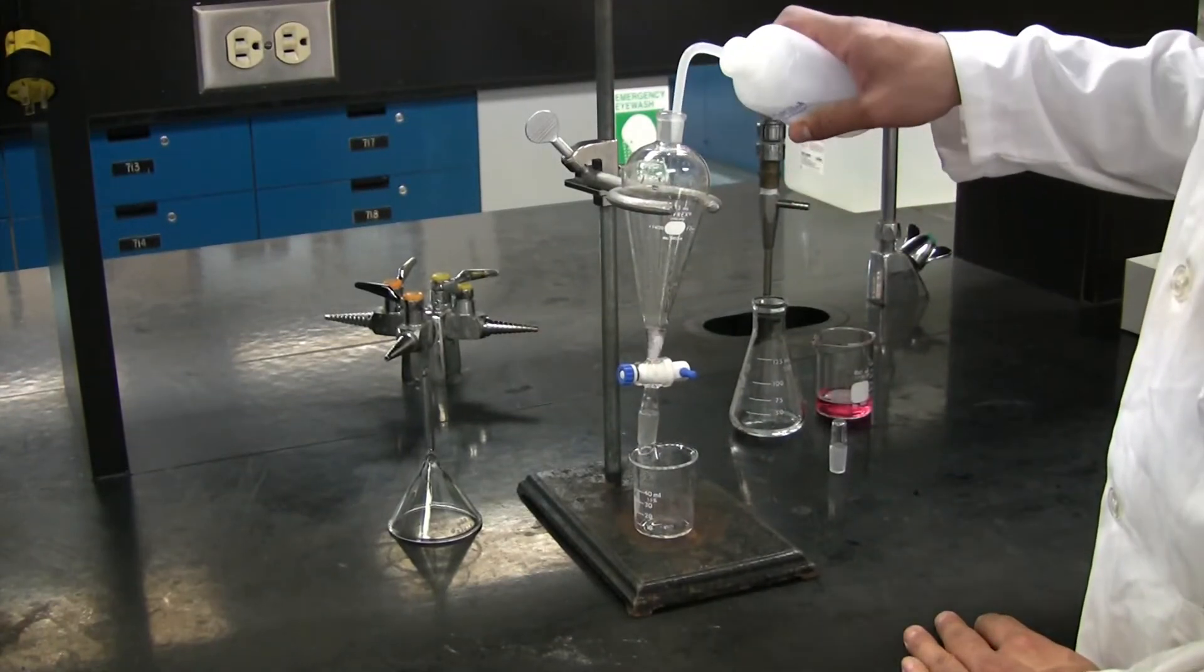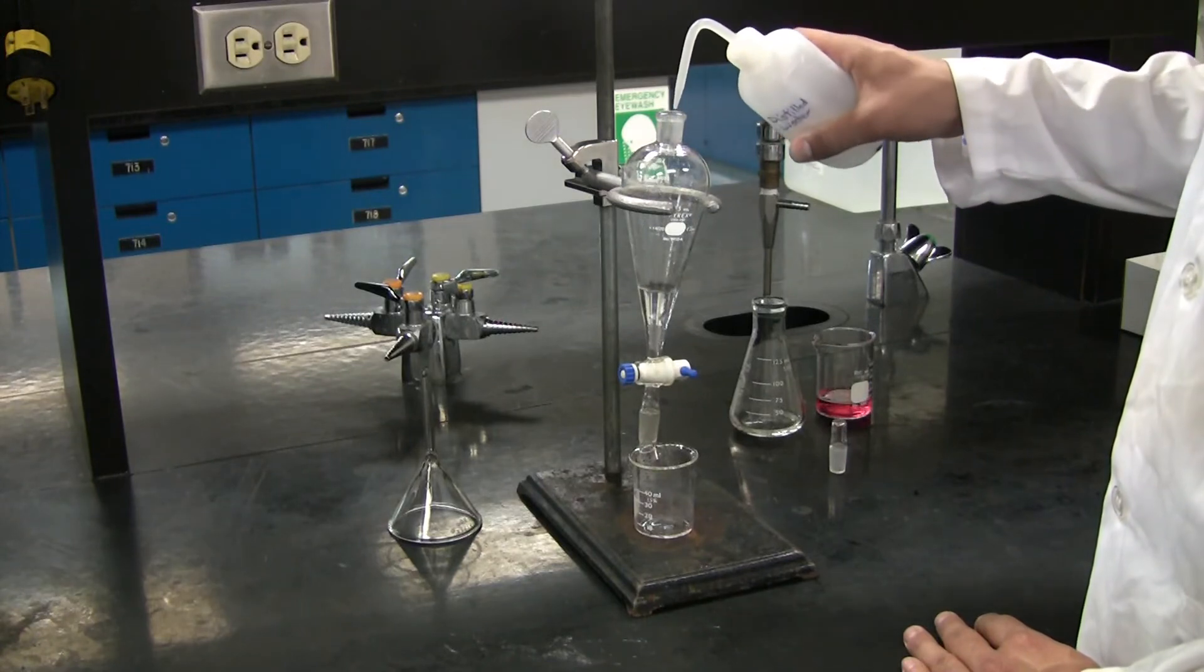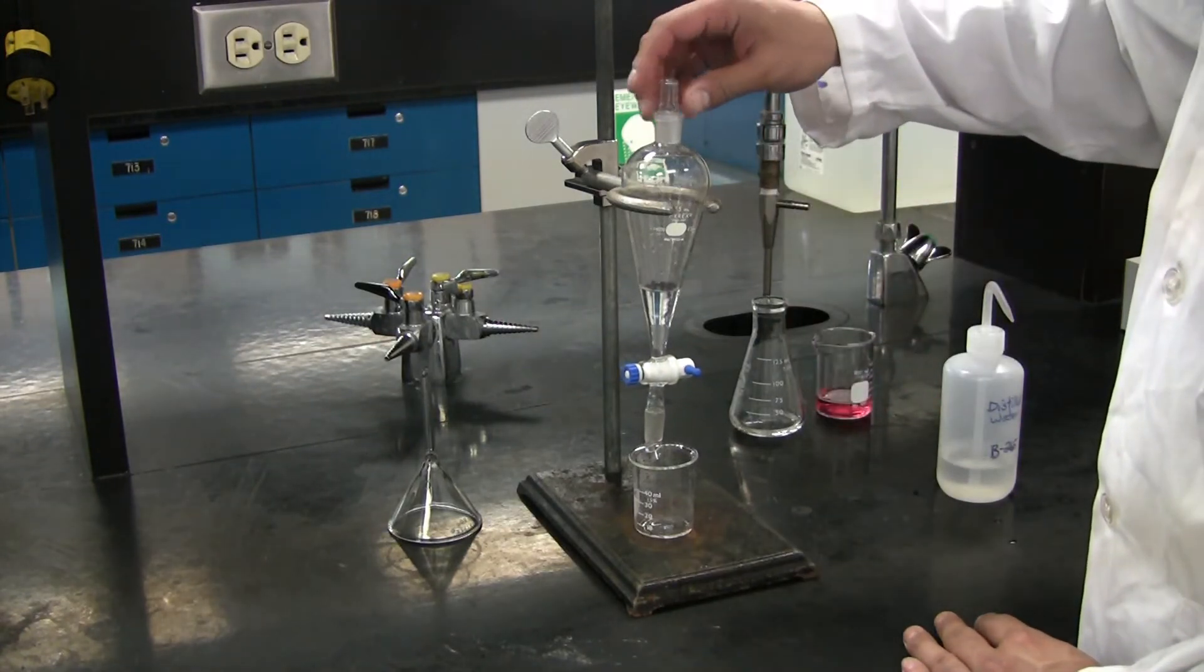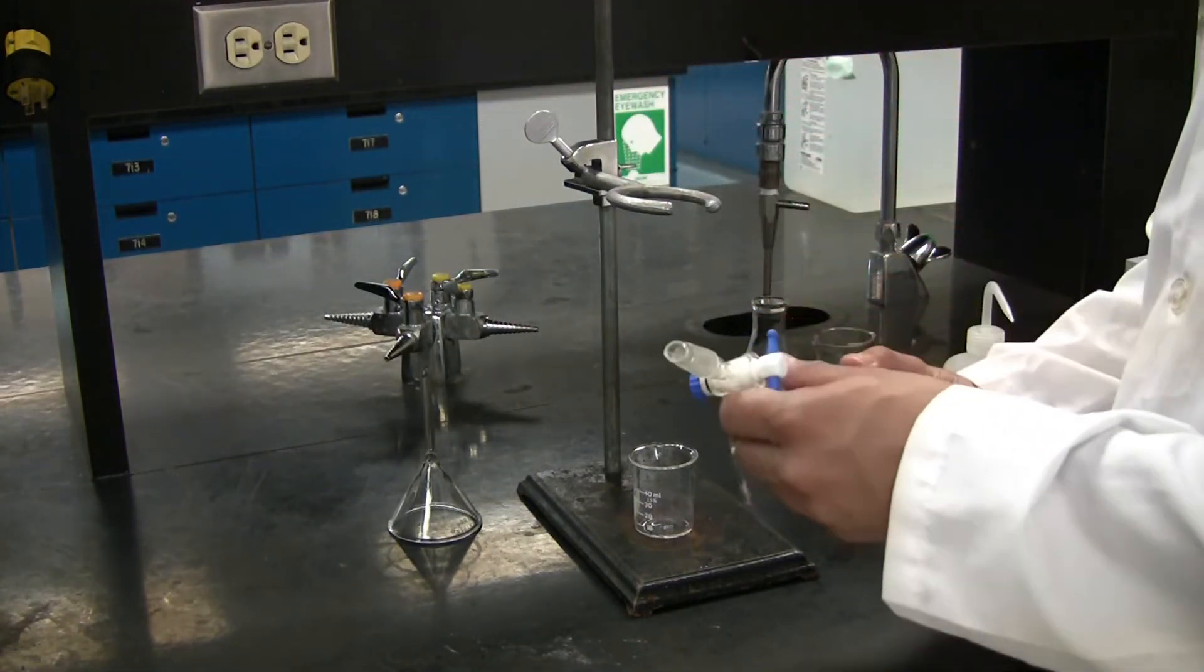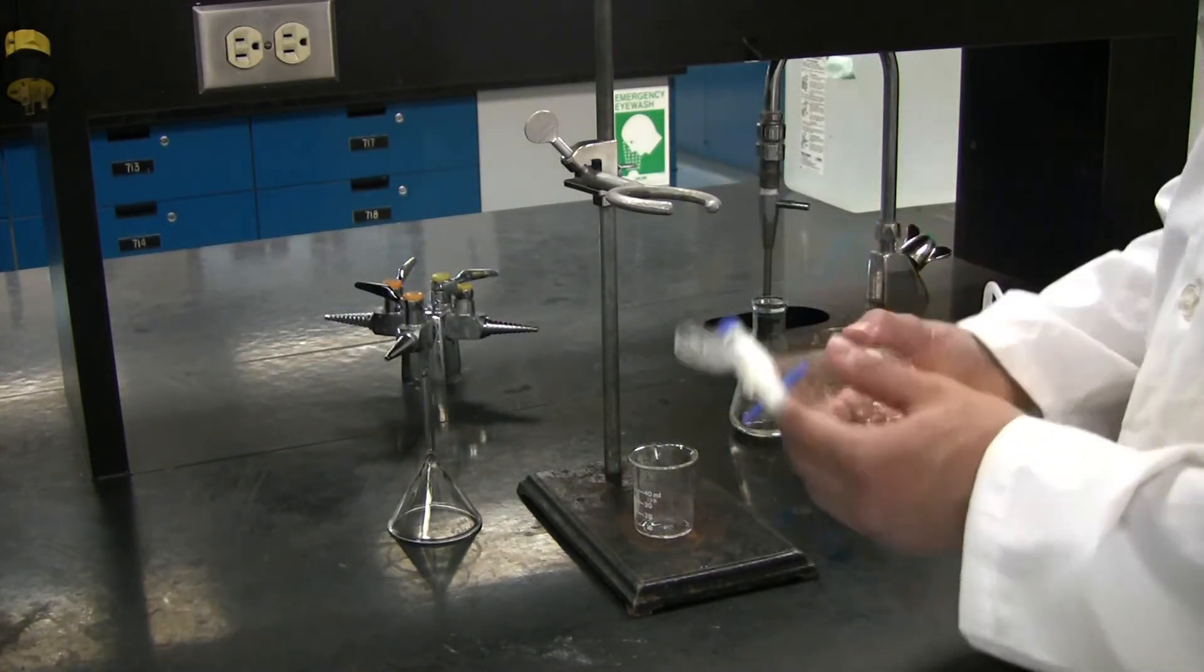Now, you must clean the separatory funnel by rinsing it with distilled water. Place the glass cap back on and remove the separatory funnel from the ring clamp and shake it back and forth to ensure that all of the inside is coated.